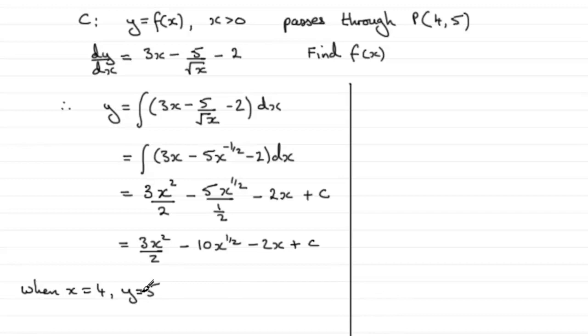So if we do that, we're therefore going to have that in place of y, we've got 5 equals 3 times 4 squared over 2 minus 10 multiplied by 4 to the power half. Now remember, that means the square root when you've got the power, so that's the square root of 4, minus 2 times 4, plus c.